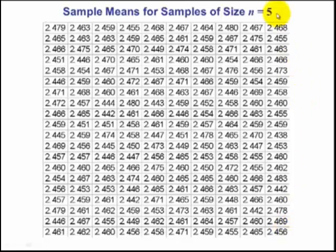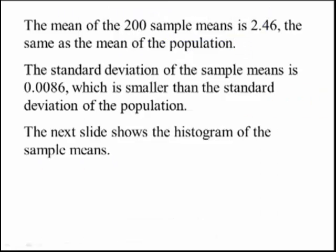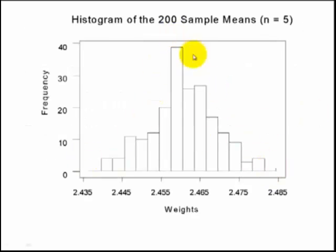Here's the display. If we take these 200 X-bars and find their mean, it equals 2.46 — the same as the mean of the original population. The standard deviation of the 200 sample means is 0.0086, which is smaller than the population standard deviation. Looking at the histogram of the sample means, it is bell-shaped. So the shape is normal, the mean equals the population mean, and the standard deviation got smaller.